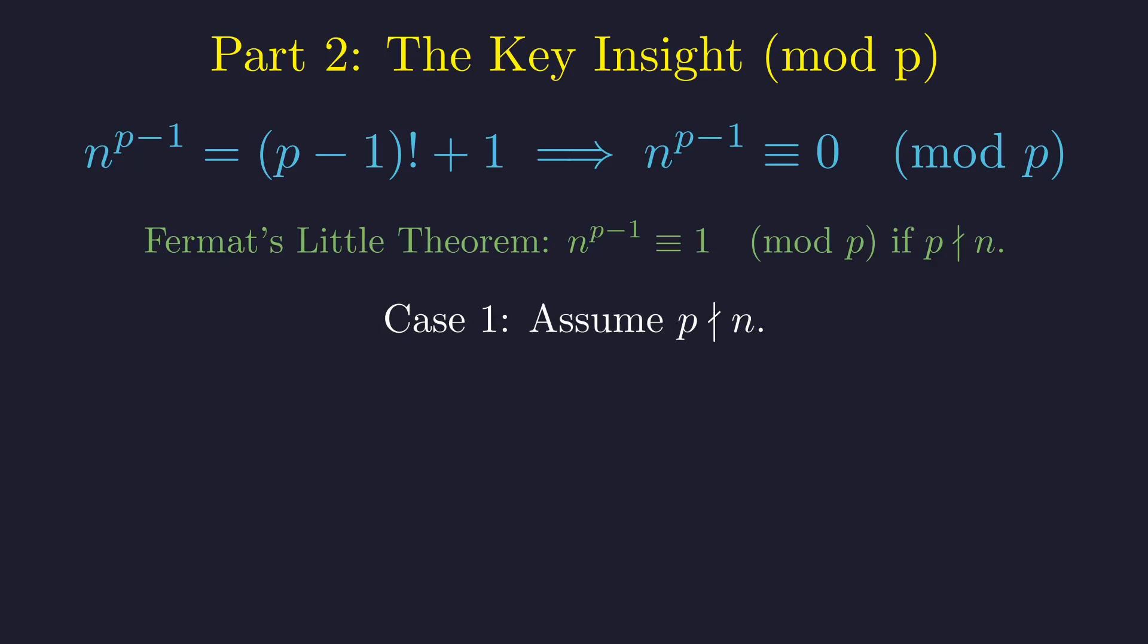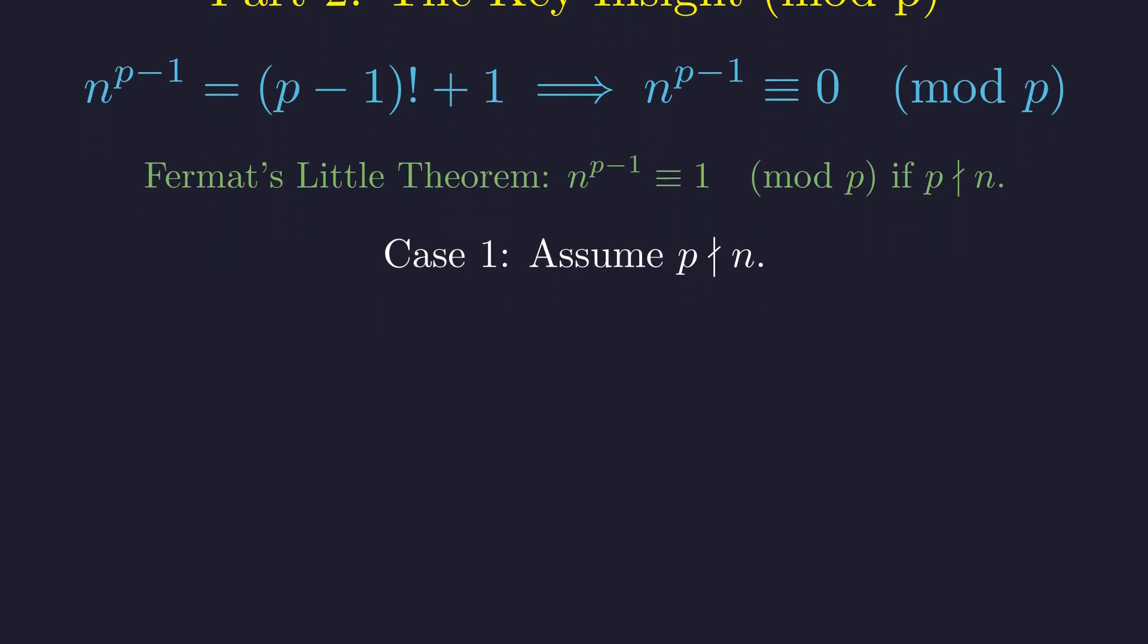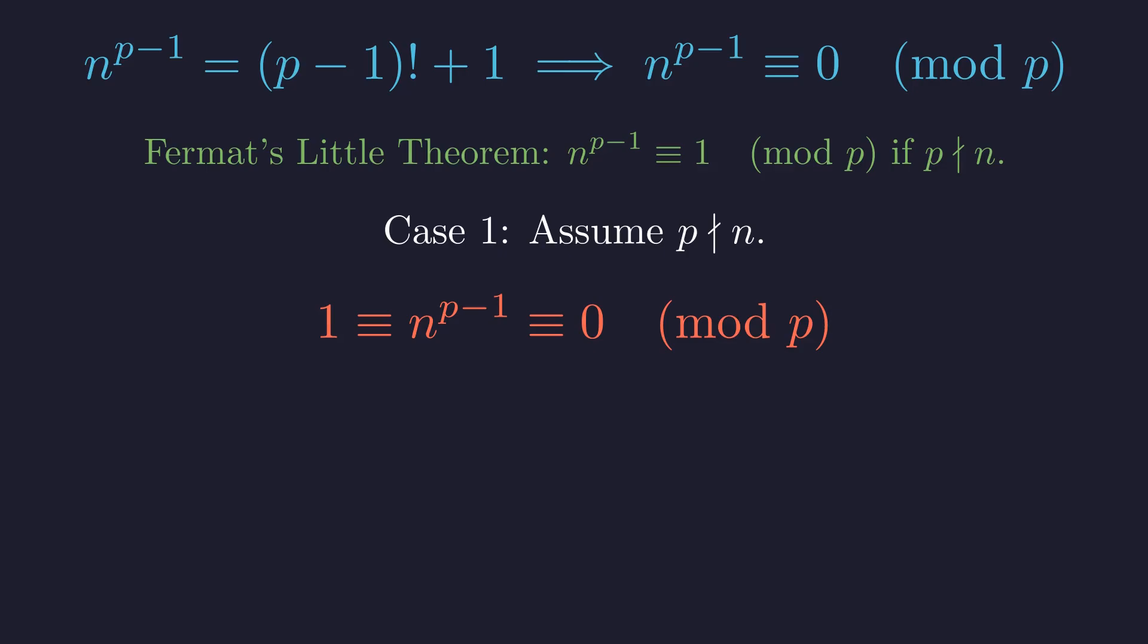Let's assume for a moment that p does not divide n. Then we'd have a contradiction. By Fermat's little theorem, the left side is 1, but we already know from the right side that it must be 0. This implies 1 is congruent to 0 mod p, which is impossible.